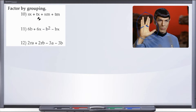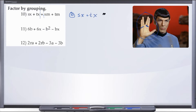Just like we said, we're going to go ahead and always isolate your middle sign. What that does is split your expression into a left side and a right side. So let's rewrite it out here so we have some more room. We have Sx plus Tx plus Sm plus Tm. We'll go ahead and isolate that middle sign.